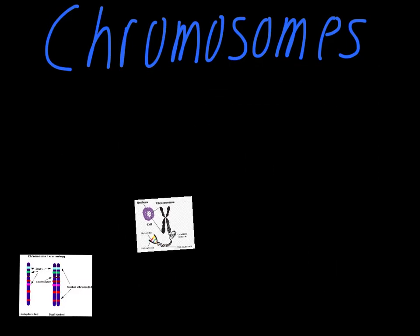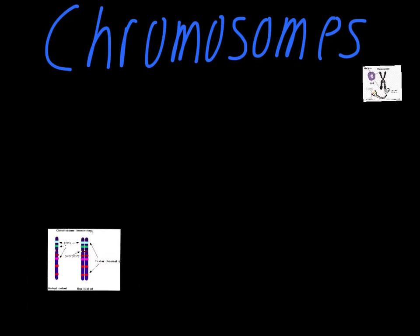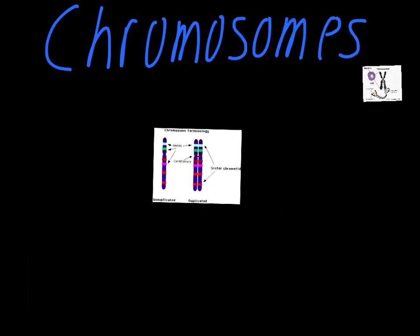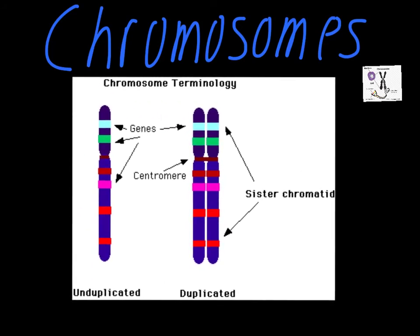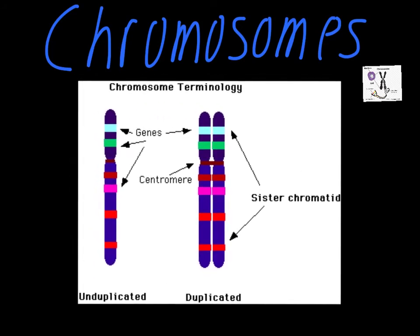To give you a better idea of the individual structure of the chromosome, we'll look at this one. What this is showing you first is an unduplicated chromosome on this side — this is what your normal body cells have. Your chromosomes are usually just one straight line with this thing called the centromere in the middle of it.